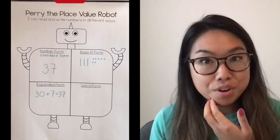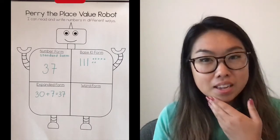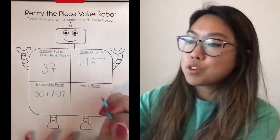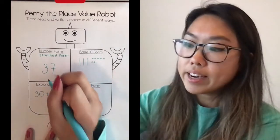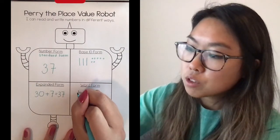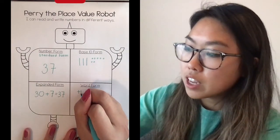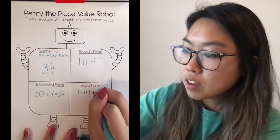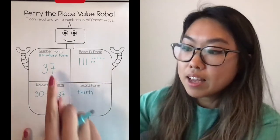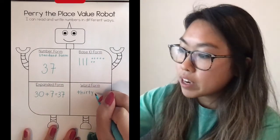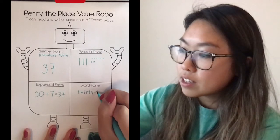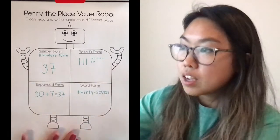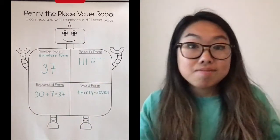Now when I think about word form, I'm thinking: how can I write it down in words? So I write thirty — and then seven — so now I can write thirty-seven. And that, friends, is word form.